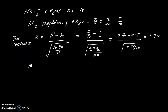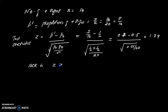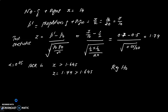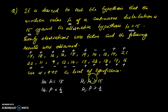Since the alternative is mu greater than 15, the best critical region for alpha = 0.05 is Z greater than 1.645. Our calculated Z = 1.79 is greater than 1.645, so we reject H0: mu = 15 (median value 15).